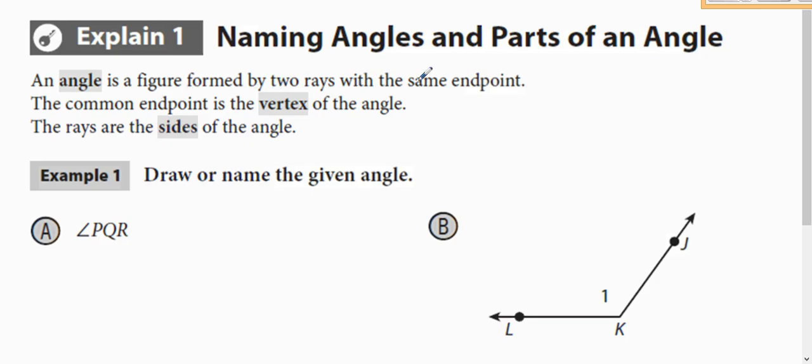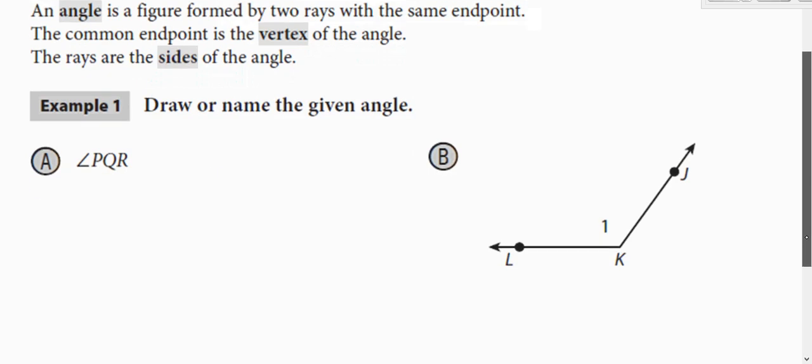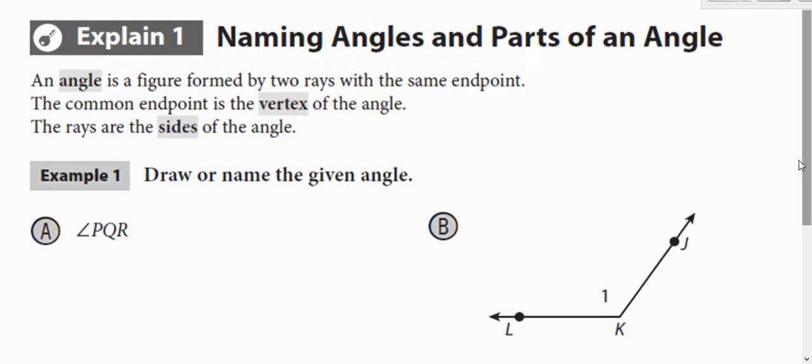So there's actually a bunch of different ways to name an angle. Here's the actual formal definition of an angle. It's formed by two rays with the same endpoint. The common endpoint is called the vertex. I used that terminology when we were copying it. And then those two rays are called the sides.